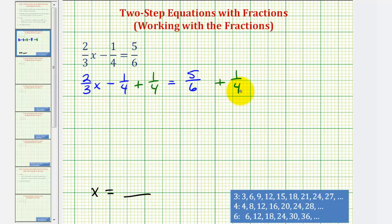Notice how we added one-fourth to both sides of the equation. On the left side, negative one-fourth plus one-fourth is equal to zero. So that's why we did that. Now on the left side, we just have two-thirds x.